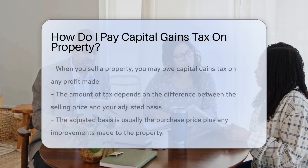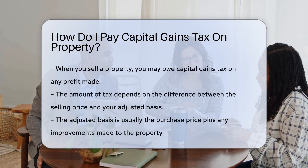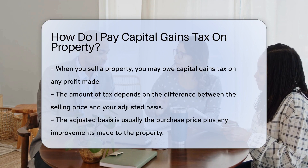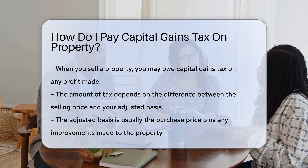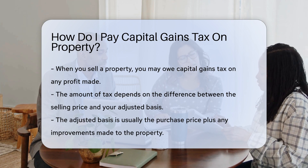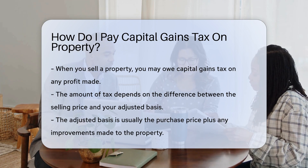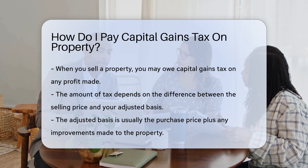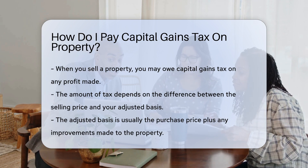When you sell a property, you may owe capital gains tax on any profit made. The amount of tax depends on the difference between the selling price and your adjusted basis. The adjusted basis is usually the purchase price plus any improvements made to the property. To determine your capital gains, subtract the adjusted basis from the selling price.